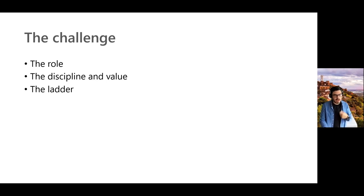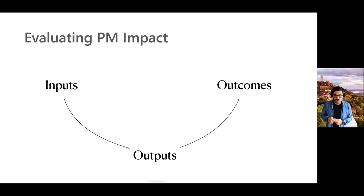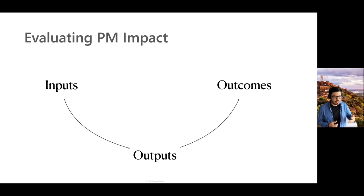My favorite framework that I've been using over the last few years is one I first heard from Shreya Doshi — the framework of input, output, and outcome. I see the PM role as a system where inputs are your investigations, market insights, PRDs, product requirement docs, one-pagers, notes, communications, and collective decisions. Those inputs typically generate outputs, which could be features, feature velocity, or improving quality of existing parts of the product that were causing issues and pain to customers.